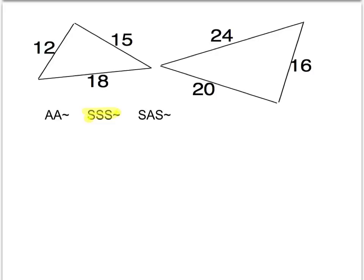So we need to check to see whether all three sides are proportional. I'm going to set up my ratios by taking the triangle on the left and dividing it by the triangle on the right. In the triangle on the left, the shortest side is 12. In the triangle on the right, the shortest side is 16. So I'll use those side lengths as one ratio: 12 on the left triangle, 16 on the right triangle.